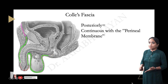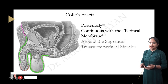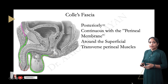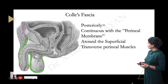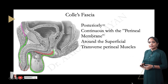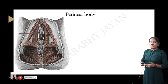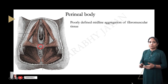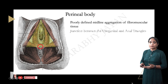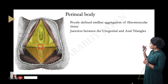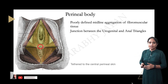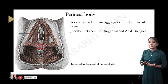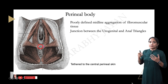The posterior attachment of Colles' fascia is around a muscle called the superficial transverse perineal muscle, and it fuses with the perineal membrane there. The perineal body is a poorly defined midline aggregate of fibromuscular tissue located at the exact junction between the urogenital triangle and the anal triangle. It is tethered or connected to the skin of the perineal region.